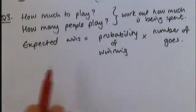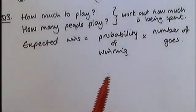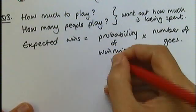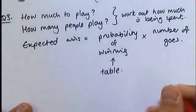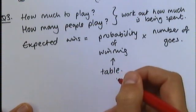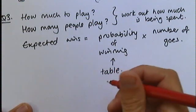And again, try to use this formula. The number of wins is the probability of winning multiplied by the number of goes. To get this, the probability of winning, you'll have to look back at your table. You'll have to see what is the probability of getting 11. You may also be able to look at your previous answer to part B, if you got that correct.